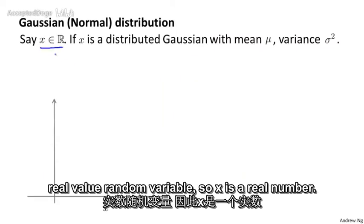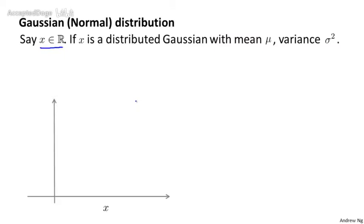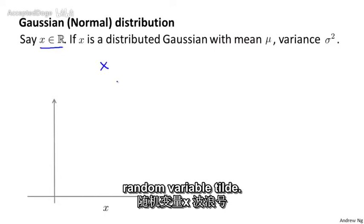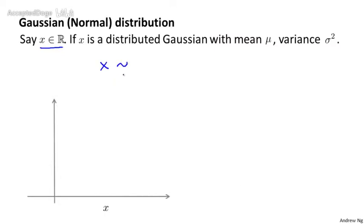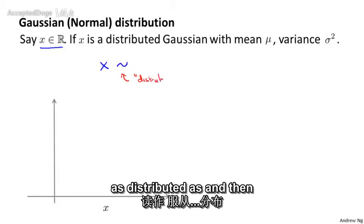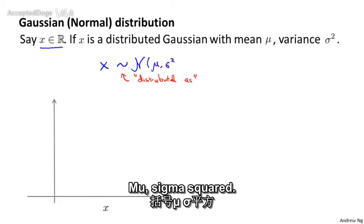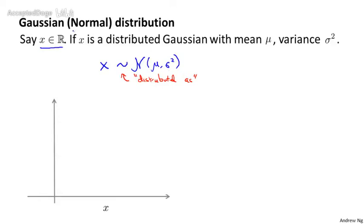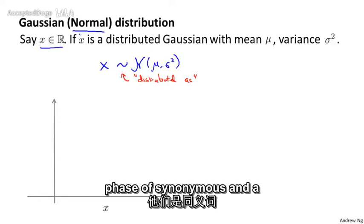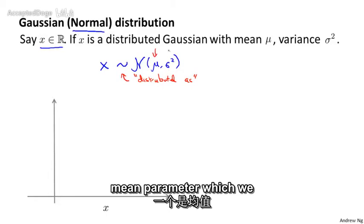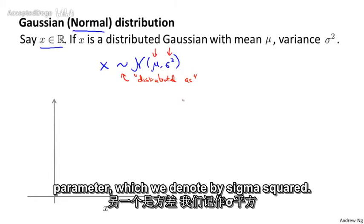Let's say x is a real-valued random variable. If the probability distribution of x is Gaussian with mean mu and variance sigma squared, then we'll write this as x tilde — meaning 'is distributed as' — script N, parentheses mu comma sigma squared. This script N stands for normal, since Gaussian and normal distribution mean the same thing. A Gaussian distribution is parameterized by two parameters: a mean parameter mu, and a variance parameter sigma squared.